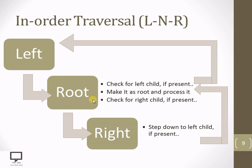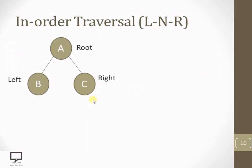So these steps we are supposed to follow repeatedly while traversing the tree in in-order. Now here I am giving you an example with a simple tree where a root node has a single left child and a single right child.